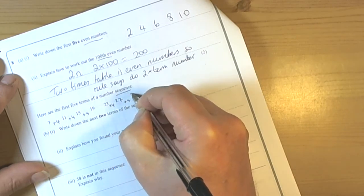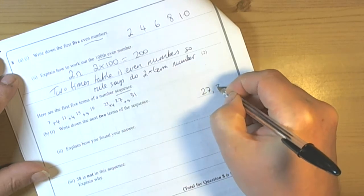27 and we're going to add 4, 31. So it's going to be 27 and 31.